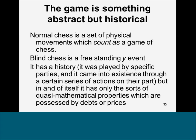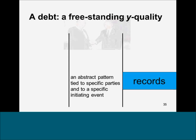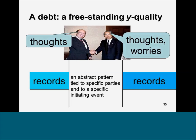Blind chess has a history—it was played by certain people—but it has only quasi-mathematical properties, as debts and priorities do. I think probably normal chess is like that too. I think Searle is wrong even about normal chess, though he's right about presidents, cathedrals, and driver's licenses. A debt is a freestanding Y quality—a relational quality of two individuals or legal persons which, like a game of blind chess, is an abstract pattern tied to history, tied to certain actions, thoughts, beliefs, memories, and records. A game of blind chess is like a debt, ontologically speaking.